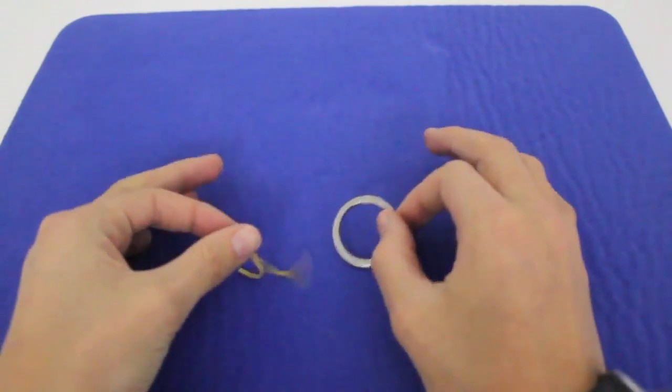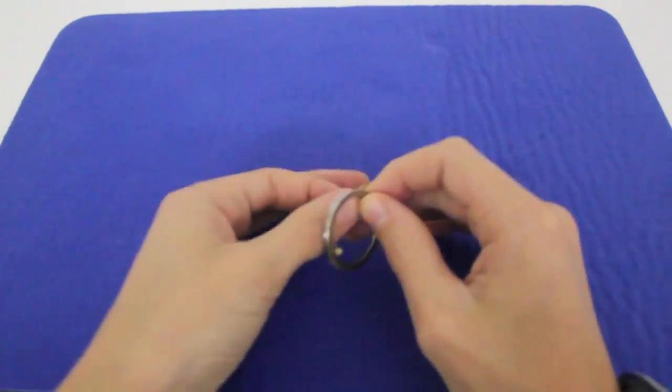Okay, so how does this work? It's very simple. There's no gimmick. You just need a normal ring and a normal rubber band. You cut the rubber band.